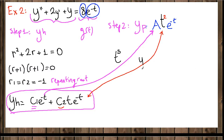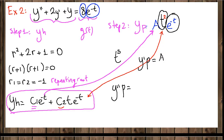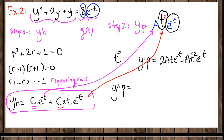Now we find y_p' and y_p''. Using the product rule on y_p = A·t²·e^(-t): y_p' = 2A·t·e^(-t) − A·t²·e^(-t).